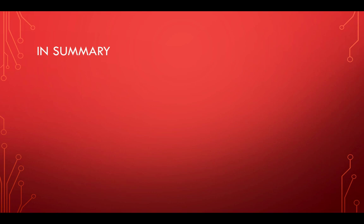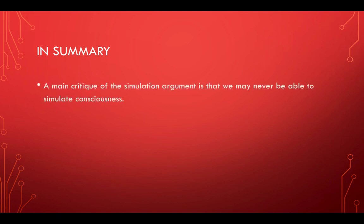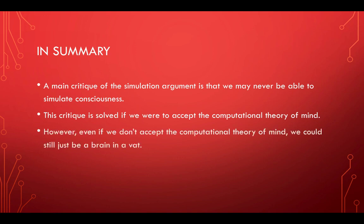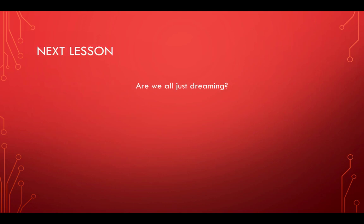In summary: the main critique of the simulation argument is that we may never be able to simulate consciousness, but this critique can be solved if we accept the computational theory of mind. However, even if we don't accept the computational theory of mind, we could still just be a brain in a vat, or we could just be dreaming. Which brings us to our next lesson: are we all just dreaming? The dream argument. We're getting into the sort of circular reasoning that goes behind this idea of being in a simulation — and I think you'll get to the point where you realize we can't ever know if we're dreaming or if we're in a simulation.